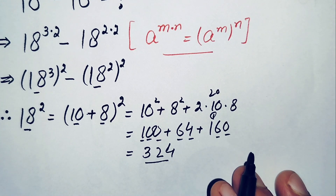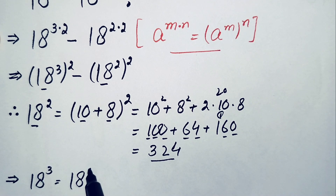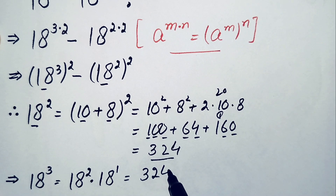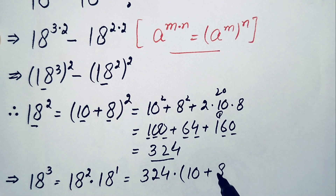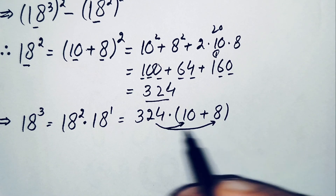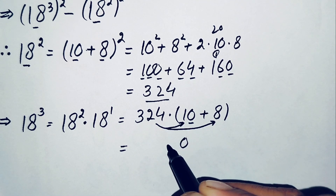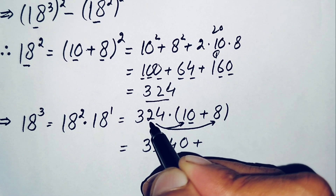Now we find the value of 18³. We write 18³ as 18² times 18, and since 18² = 324, this becomes 324 times 18. We write 18 as (10 + 8) and multiply 324 first by 10: 324 times 10 gives 3240.